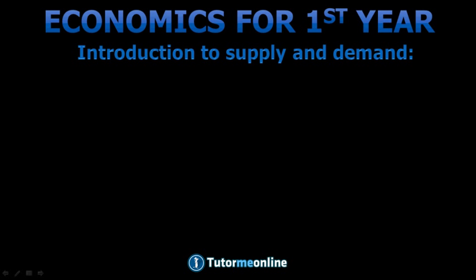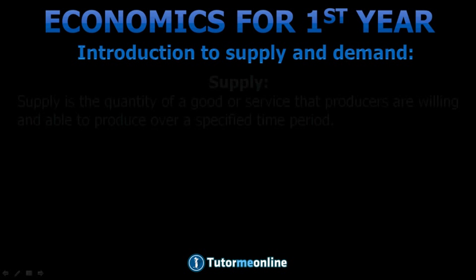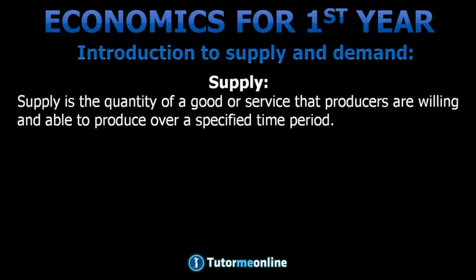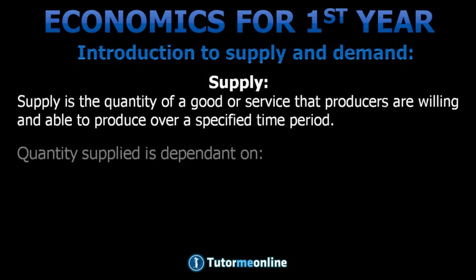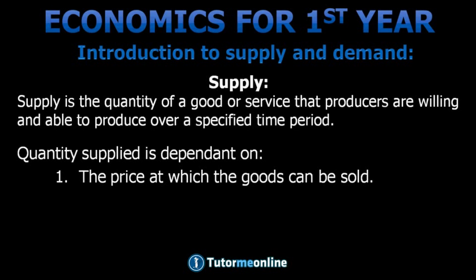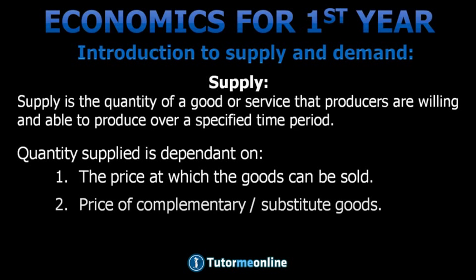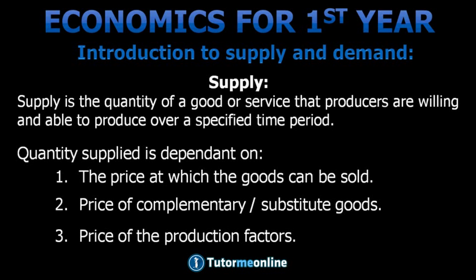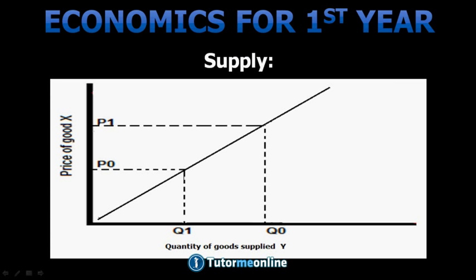Supply is the quantity of goods or services that producers are willing and able to produce over a specified time period. The quantity supplied is dependent on the price at which the goods can be sold, the price of complementary or substitute goods, and the price of the production factors. Just like demand, you can also illustrate supply graphically.